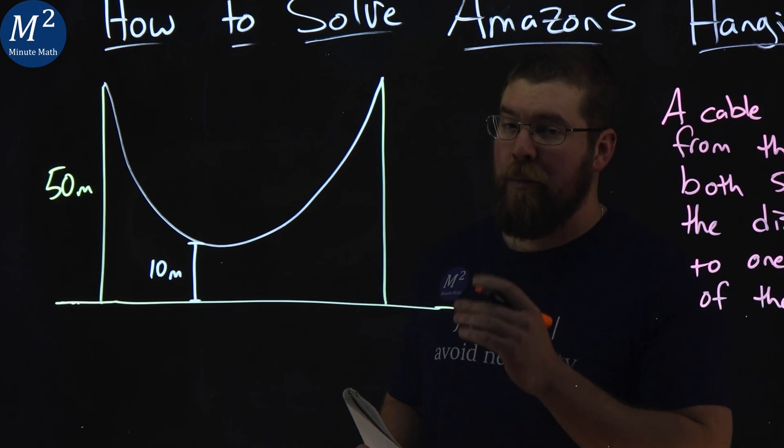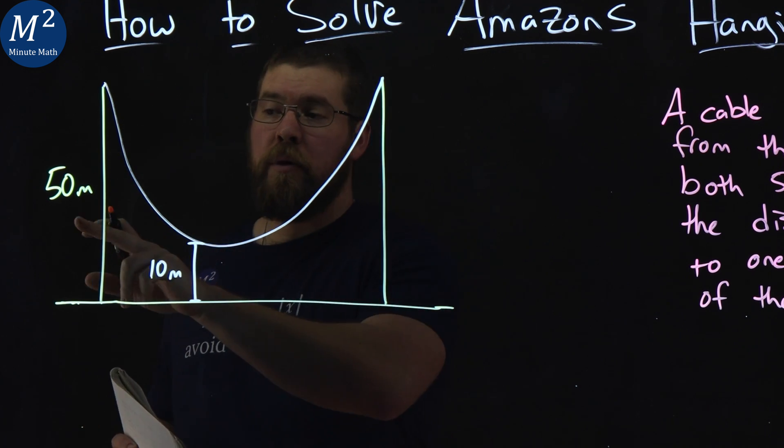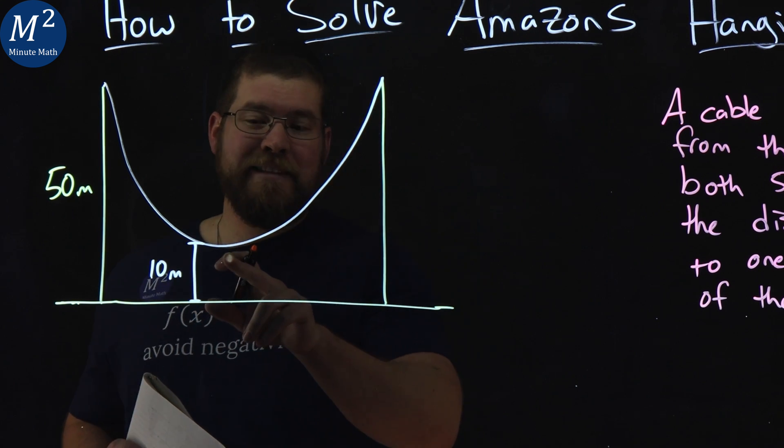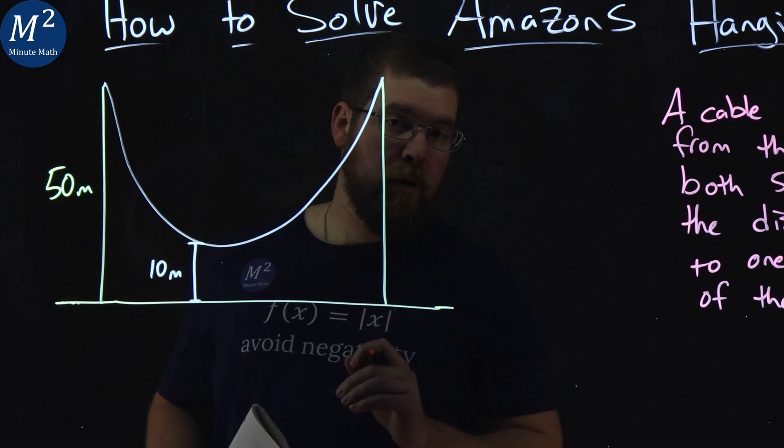So now let's look at our picture. We have our cable in blue hanging between two poles. Each of these poles are 50 meters high and the cable dangles to be 10 meters above the ground. We want to find the distance between these two poles.